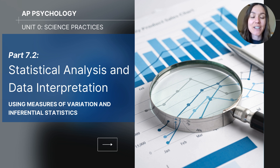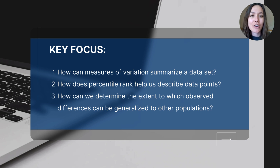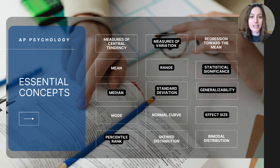Hi everyone, this video is about statistical analysis and data interpretation for AP Psychology students. It falls in the Unit Zero series about science practices and is the second part of the statistical analysis videos. This video will cover measures of variation and inferential statistics. By the end, you should be able to answer: how can measures of variation summarize a data set, how does percentile rank help us describe data points, and how can we determine the extent to which observed differences can be generalized to other populations?